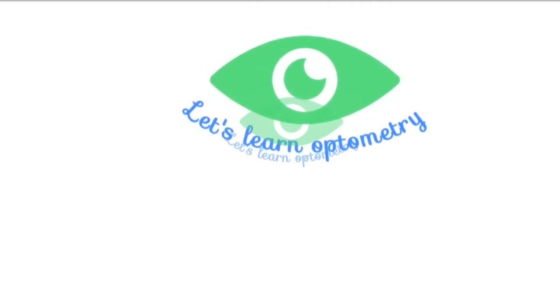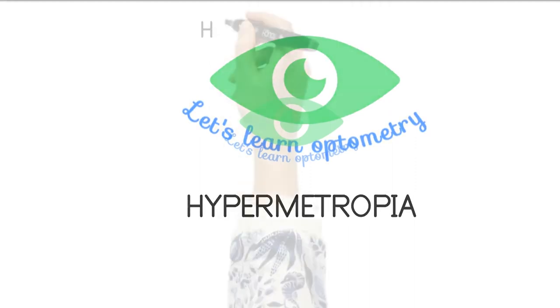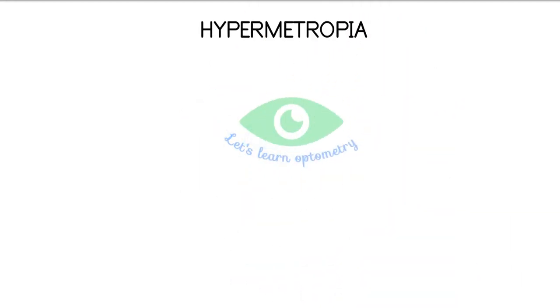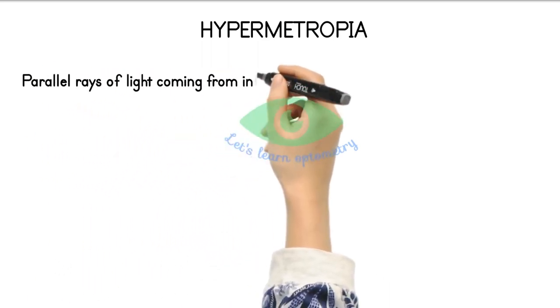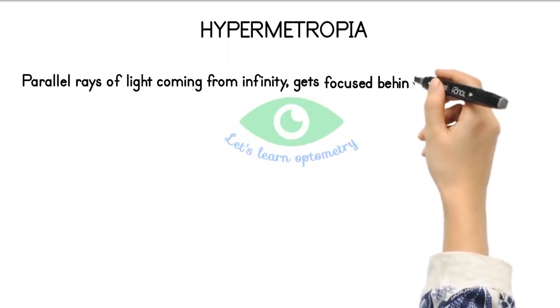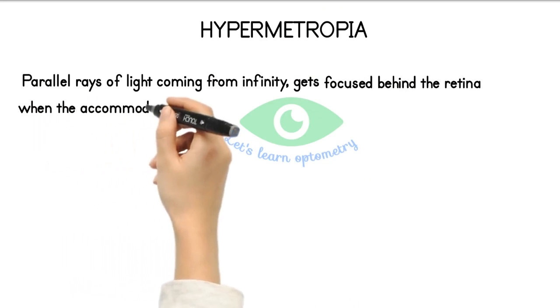Hello all, welcome to Let's Learn Optometry. In this video we will see about hypermetropia. Hypermetropia is a refractive error in which the parallel rays of light coming from infinity get focused behind the retina when accommodation is at rest.